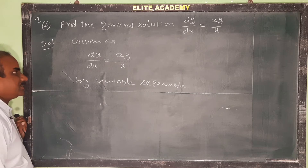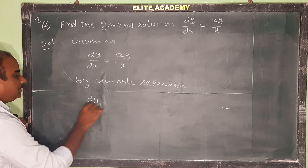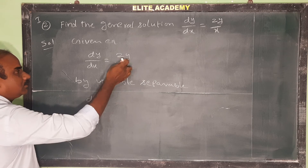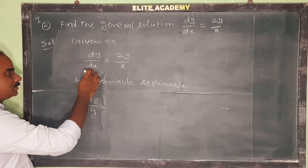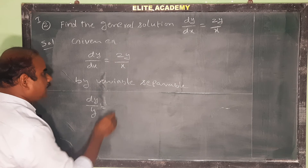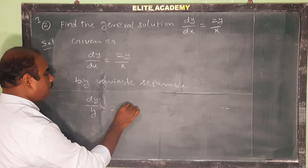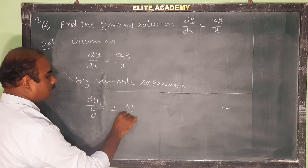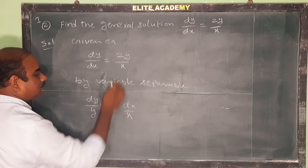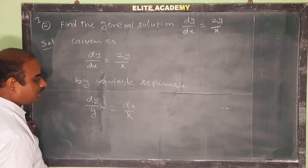Separating variables: bring y terms to the left side and x terms to the right side. So dy/y is equal to 2 dx/x.